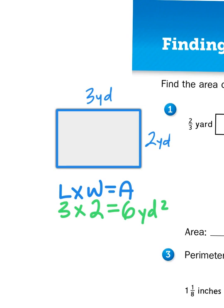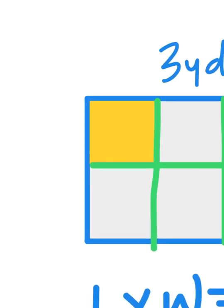What does that mean — square units? When I'm figuring out the area of a problem, I'm dividing that space into square units. I have 3 squares that go across the top and a second row of 3 squares across the bottom. Each individual square is considered a square yard, where this measurement is 1 yard and this measurement is 1 yard, making it 1 yard squared.